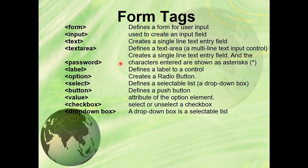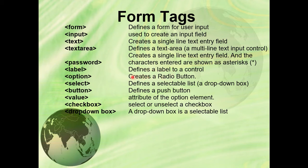These are all the form requirements. For example: form defines a form for user input; input is used to create an input field; text creates a single line text entry; textarea lets you enter multiple lines; password is for security — it identifies what type of characters you enter; label defines a label for a control; option creates a radio button; select creates a drop-down menu list. You can also insert a button, a value attribute for the option element, and a checkbox to select or unselect something like male or female.